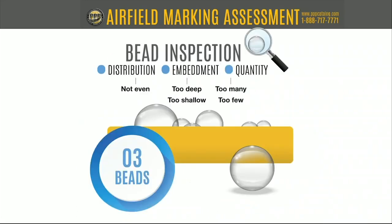Bead inspection looks at three things: distribution — is it spread evenly from edge to edge of the marking? Embedment — is the bead too deep or too shallow? Both extremes minimize reflectivity. If too shallow, the beads will eventually roll out, which is especially costly with expensive type three beads. And quantity — just because one pound of beads is good doesn't mean two pounds is better. Bead embedment is super important for retroreflectivity and safety.